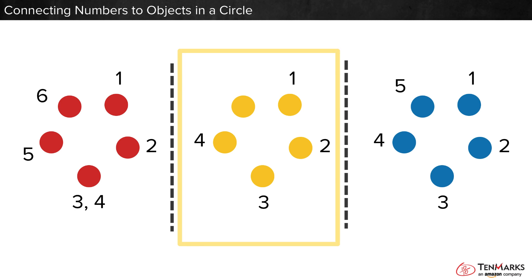The second picture counts one, two, three, four, but skips a dot. That's not right either.